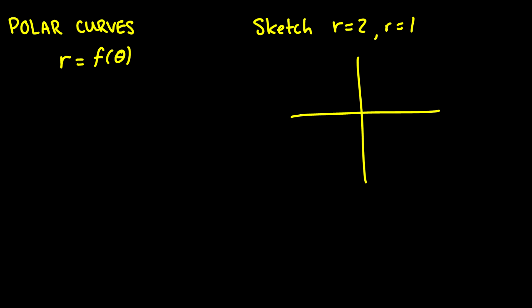In this video we're going to be looking at how to sketch polar curves. So let us begin by telling you that any polar curve is going to be written as a function of theta. So we're going to have r is equal to f of theta for some theta. Now there are a couple curves we're going to do right off the bat which is going to be r is equal to 2 and r is equal to 1.